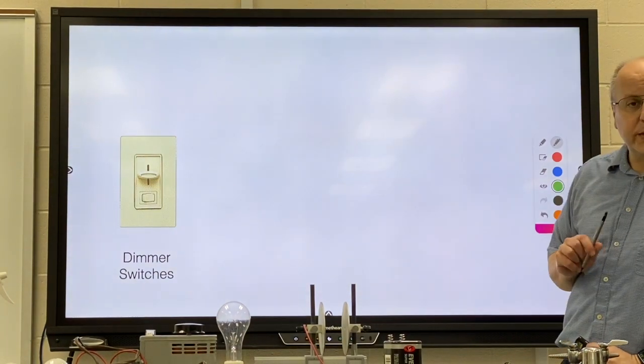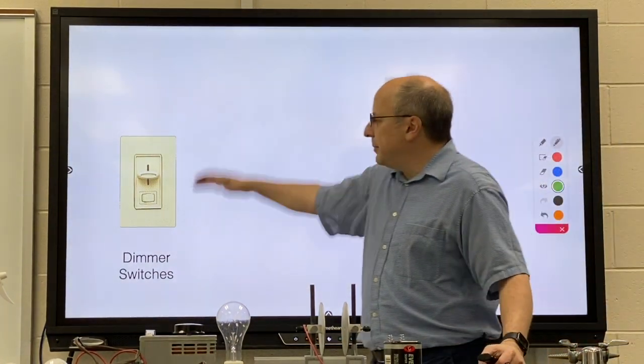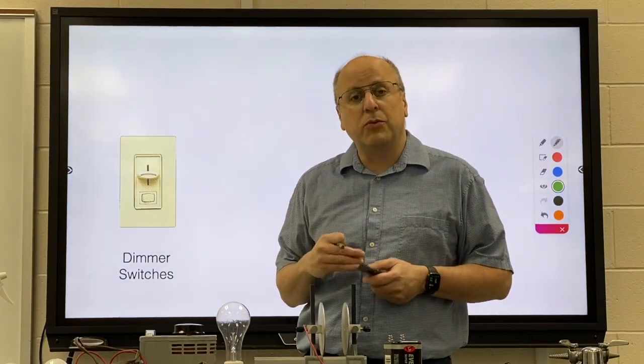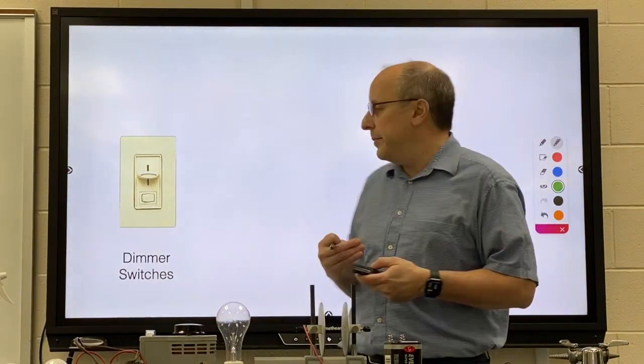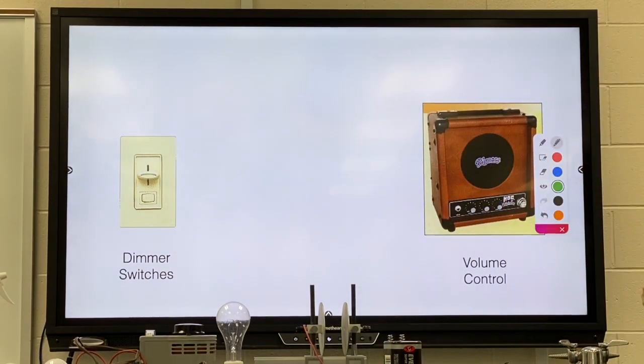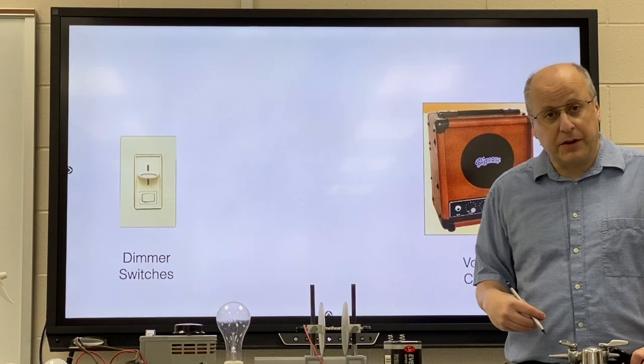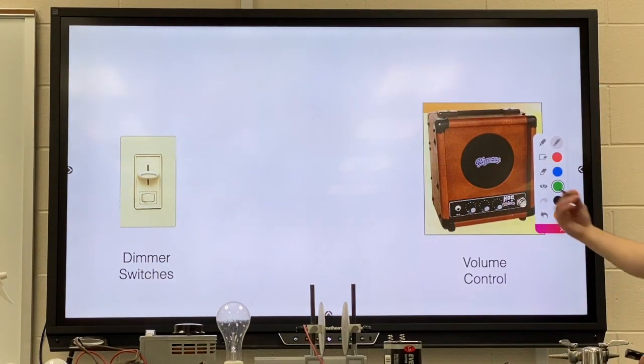So these are the dimmer switches in your house. You slide them up and down, there's a little wire in there, and you're using more or less of the wire, which will make the light brighter or dimmer. We have them on things like amplifiers where we can make it louder or softer. It's a volume control. It's a variable resistor.